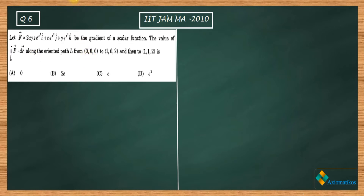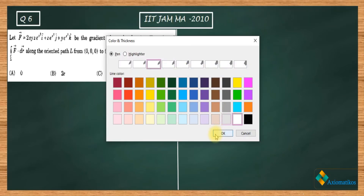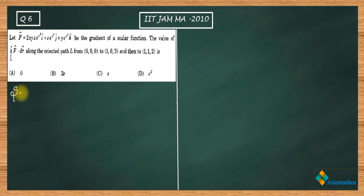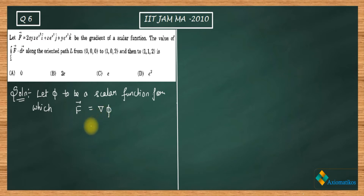It is given that f is the gradient of some scalar function. Let phi be that scalar function. So f vector is equal to del of phi — this is given in the question. Now let us try to evaluate phi first.